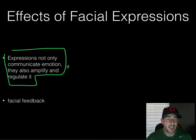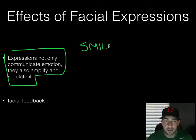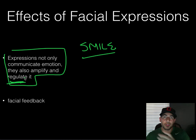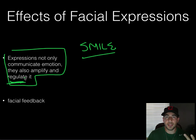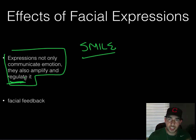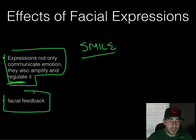A cool thing with emotions is that they not only communicate emotions but also amplify and regulate them. Just by smiling, you're helping regulate your emotions. When you smile, you're sending signals to your brain — the motor cortex is sending signals saying 'I'm smiling, so I should be happy.' Actually smiling changes your emotions toward a more positive state. Likewise, frowning or scowling can change it more negatively. This is the idea of facial feedback.